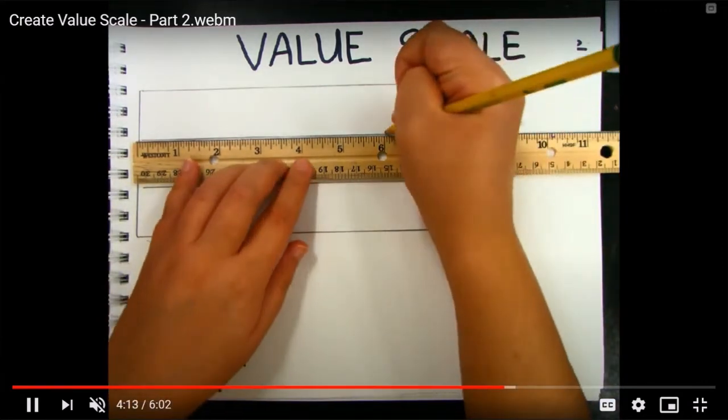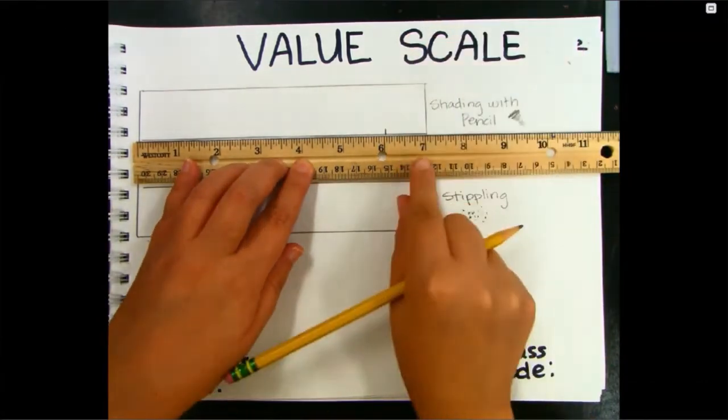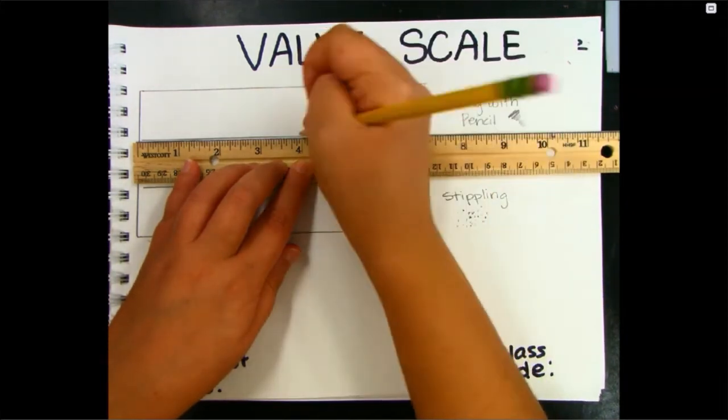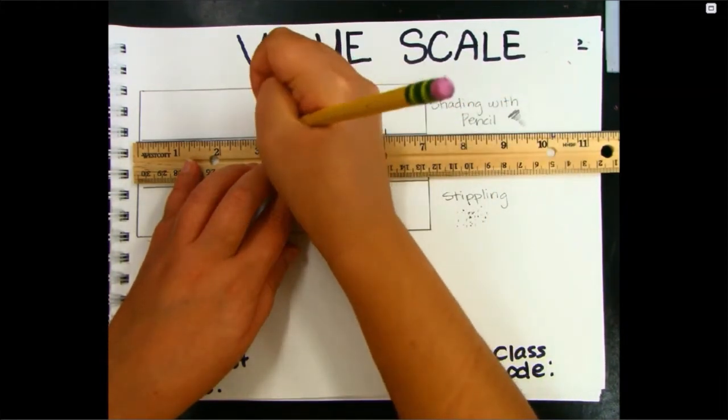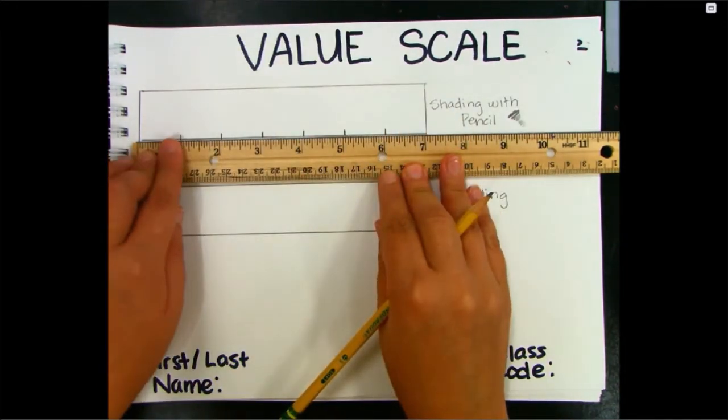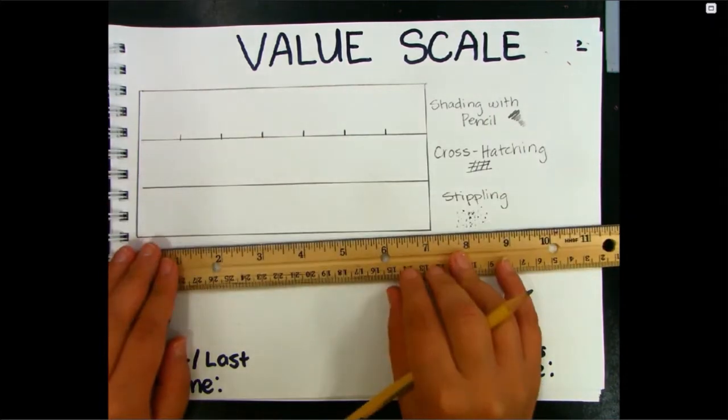Next I want you to draw one inch dashes across your grid using your ruler. You're going to be using this later when you create your value scale, so again make sure they are one inch apart.